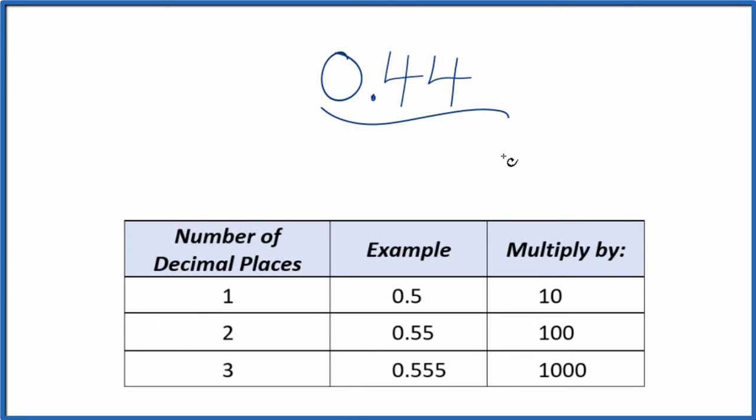Let's write the decimal 0.44 as a fraction. So the first thing we want to do is write 0.44 over 1. We're just dividing by 1. We haven't changed the value, but now we have the start of a fraction.